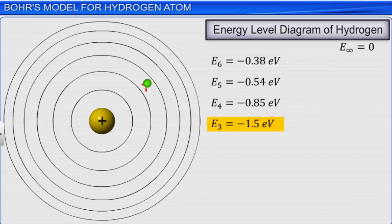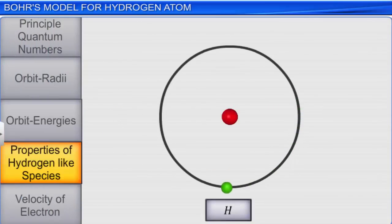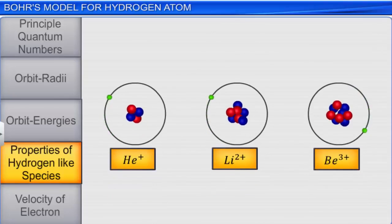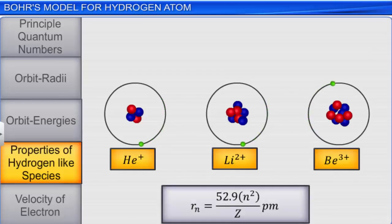Bohr's theory also applies to other ions which are isoelectronic with hydrogen, such as He⁺, Li²⁺, and Be³⁺ ions, that contain one electron each. The energies of the stationary states of hydrogen-like species are given by the expression: E_n equals minus Rydberg constant multiplied by the square of atomic number divided by the square of principal quantum number. The orbit radii of these ions is given by the expression: R_n equals Bohr's radius multiplied by n squared divided by the atomic number.